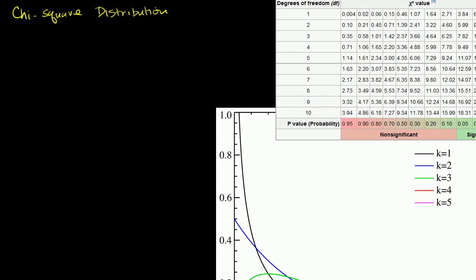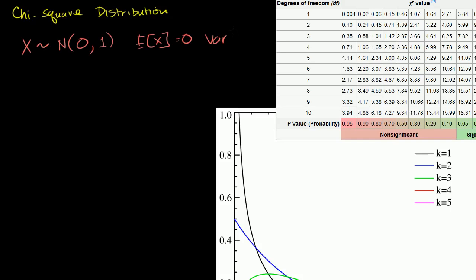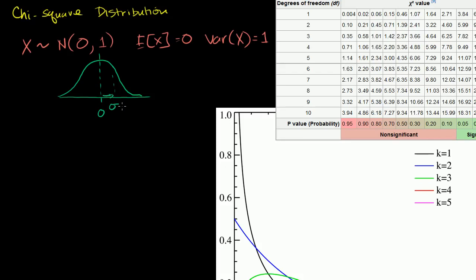Let's say I have some random variables, and each of them are independent, standard, normally distributed random variables. If x is normally distributed, we write that x is a normal random variable with a mean of 0 and a variance of 1 — meaning the expected value of x equals 0 and the variance equals 1. So when we take an instantiation of this variable, we're sampling from a standardized normal distribution with mean 0 and standard deviation of 1.